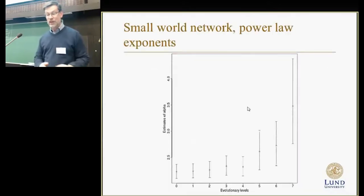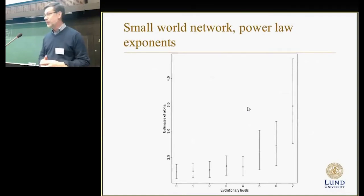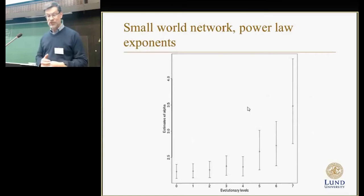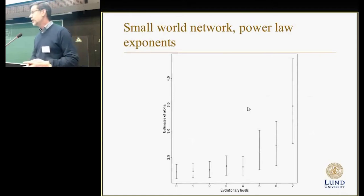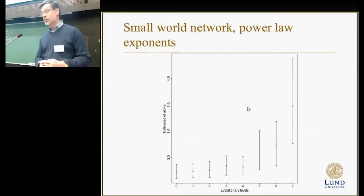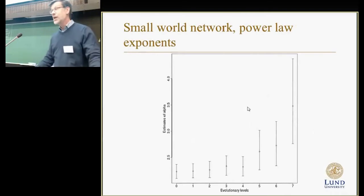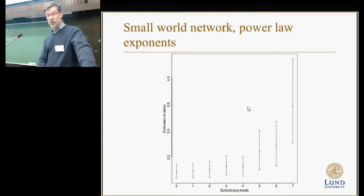This is one feature of small world networks. More mathematically, we can look at the power law exponent. For small world networks, these exponents are typically between two and three, which is the case here on the different levels. On level seven, there are just a few proteins and a few interactions, so the variation is higher and the value is not that reliable. Anyhow, this indicates that we have a true small world network.